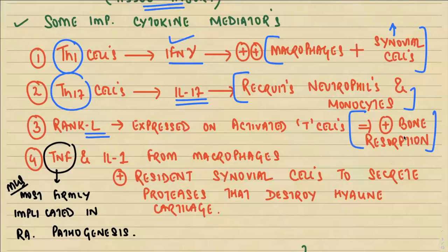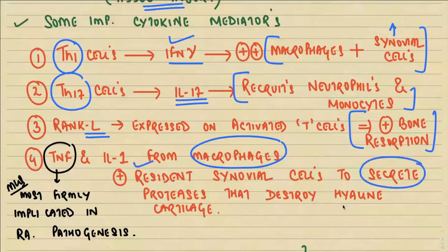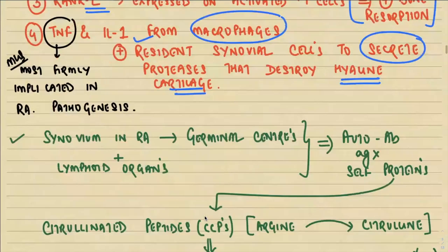TNF and interleukin-1, released from macrophages, stimulate the resident synovial cells to secrete proteases, causing destruction of the hyaline cartilage. Always remember that TNF is the most firmly implicated cytokine in the pathogenesis of rheumatoid arthritis. If you have to choose one in an MCQ between interleukin-1 and TNF, TNF is the answer — it is the most important cytokine involved in RA pathogenesis.